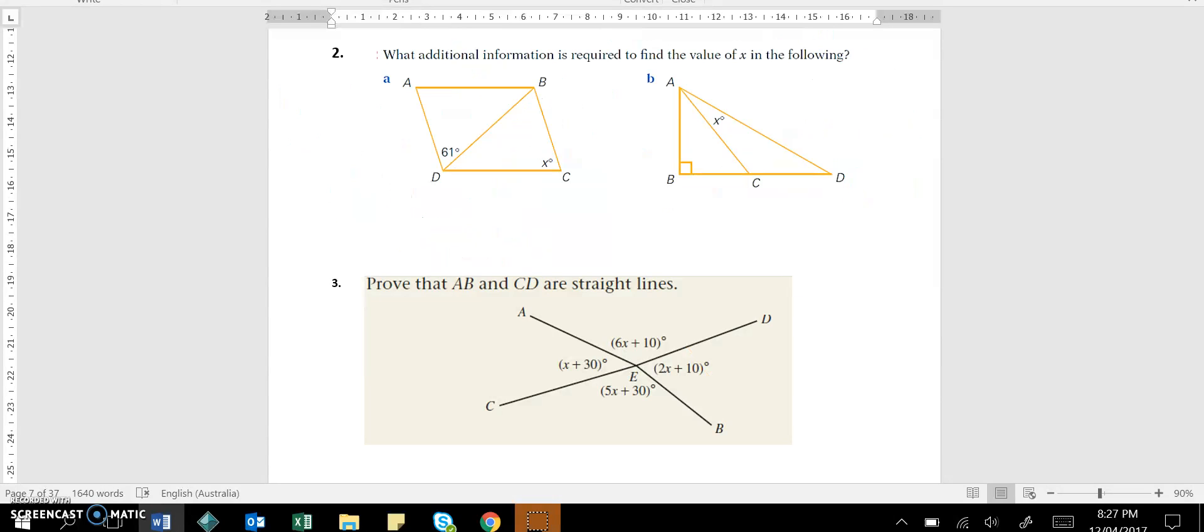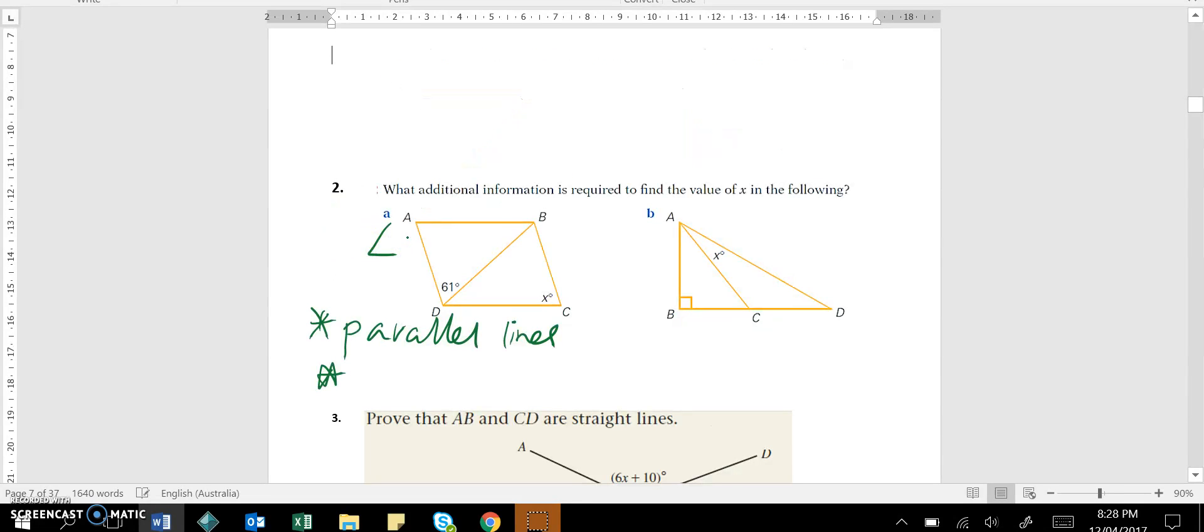In question 2 we are asked to write down what additional information is required to find the value of X. So in this shape here we're not given much information in ABCD. It looks like it could be a parallelogram, but we simply don't know. So in this case we would actually need to be given parallel lines, because without that we really don't have enough information. We would also need to be given angle ABD.